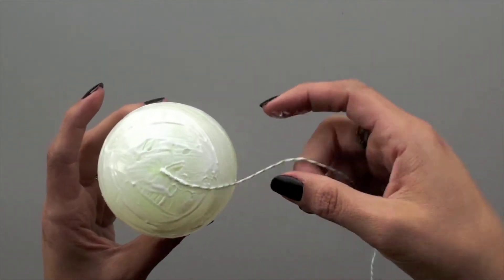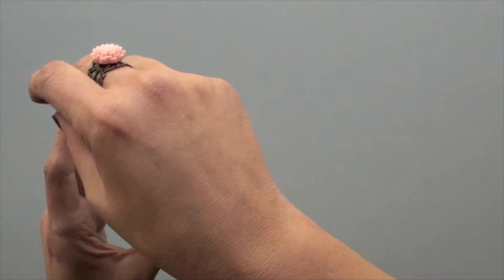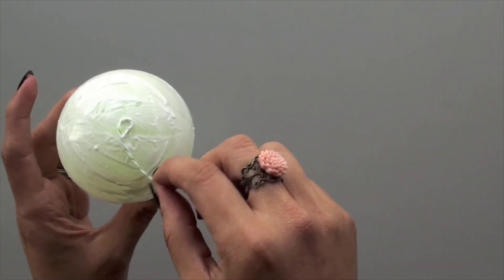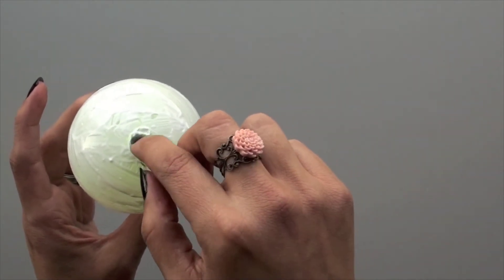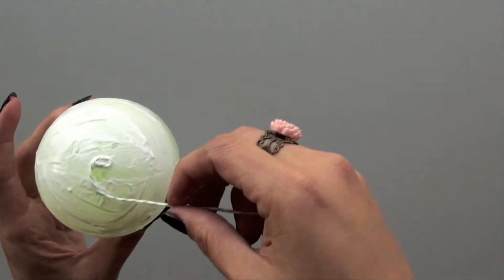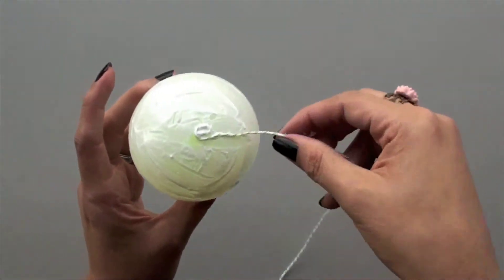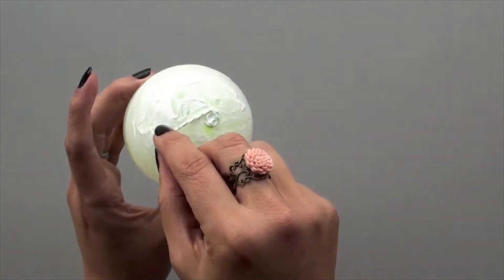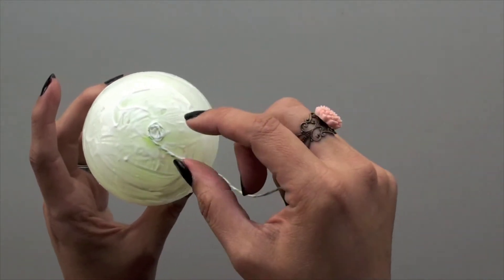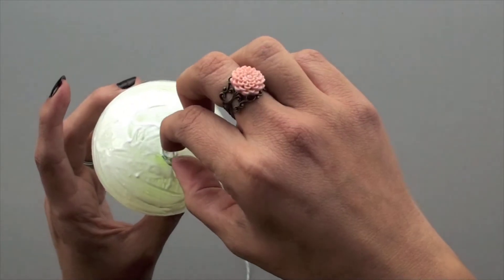This way what it does is it allows you to kind of just bend it as easy as I'm doing it here. Then what you want to do here is just bring in that tip as close to it as possible so you don't leave a hole, because you don't want things slipping through. Kind of like basket weaving, I guess is the best way to put it.